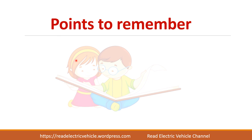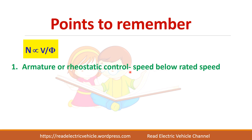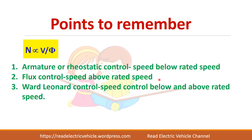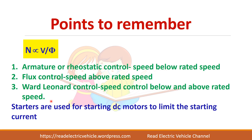The points to remember are: speed is directly proportional to voltage and inversely proportional to flux. Based on this there are two techniques — armature or rheostatic control, where you are able to control the speed below base speed or rated speed; and flux control method, where by reducing the flux the speed will increase, so speed above rated speed can be controlled. There is also the Ward-Leonard method, where speed control above and below base speed is possible. Starters are used for starting DC motors to limit the initial starting current.